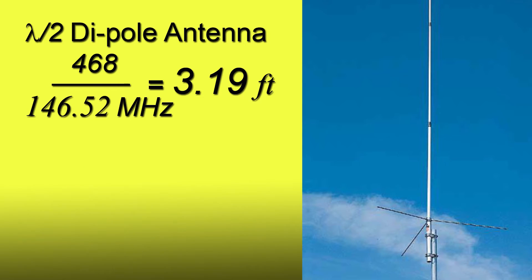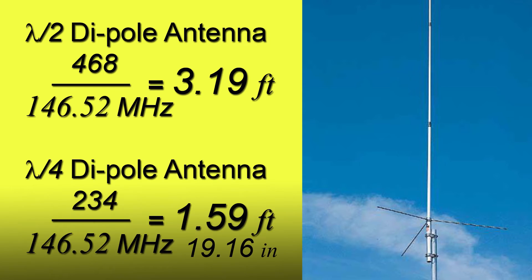Let's punch in some numbers. Let's assume we're trying to make an antenna for 2 meters. In this example, we'll use 146.52 MHz. So we take 468 over 146.52 megahertz, and that equals 3.19 feet.